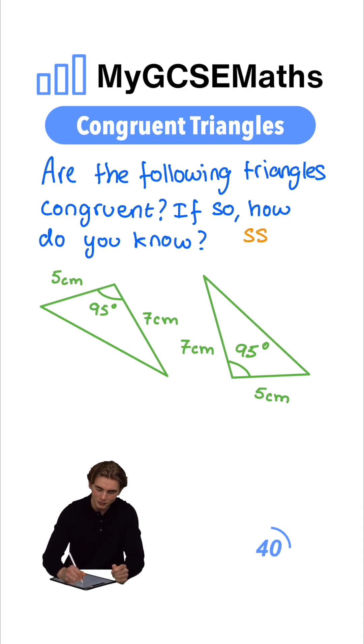Either we have three side lengths which are the same—side, side, side—or we have angle, side, angle. So two angles which are the same and a side length which is the same in between them.